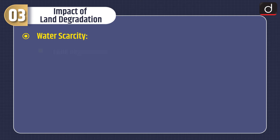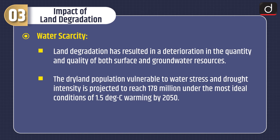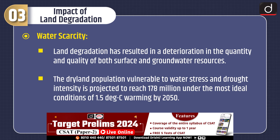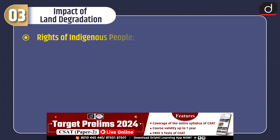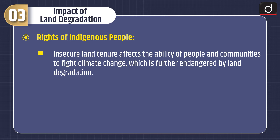Third is water scarcity. Land degradation has resulted in deterioration in the quantity and quality of both surface and groundwater resources. The dry land population vulnerable to water stress and drought intensity is projected to reach 178 million under the most ideal conditions of 1.5°C warming by 2050. Fourth, regarding rights of indigenous people, insecure land tenure affects the ability of people and communities to fight climate change, which is further endangered by land degradation.